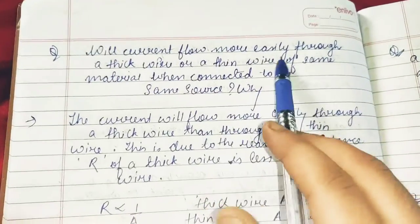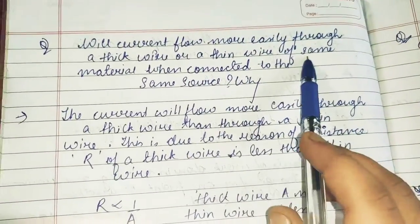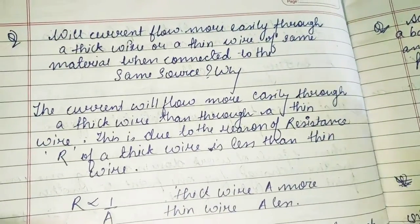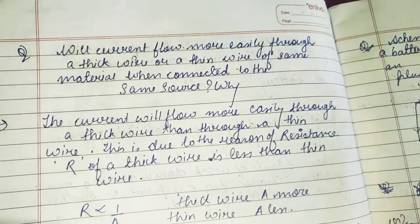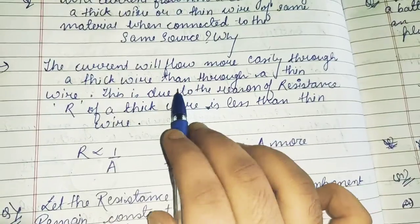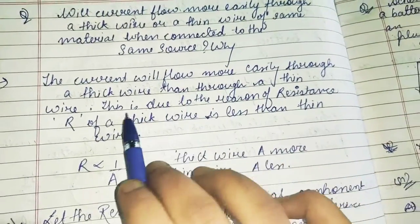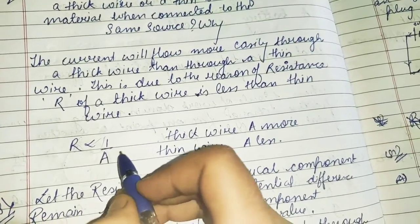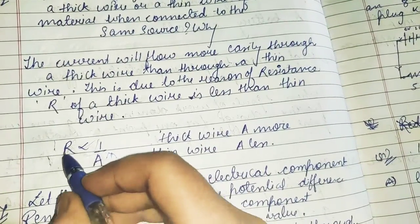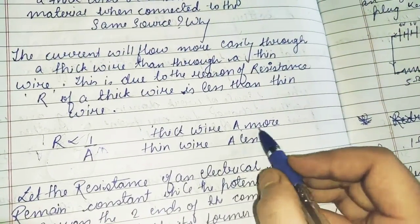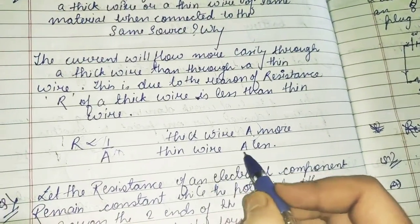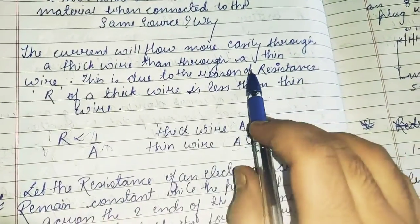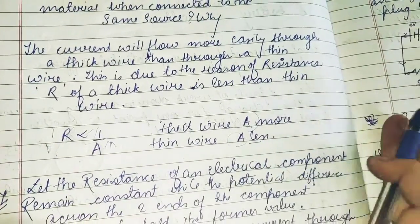Will current flow more easily through a thick wire or a thin wire of the same material when connected to the same source? The current will flow more easily through a thick wire than a thin wire. Resistance is inversely proportional to the area of cross section. A thick wire has more area of cross section, so its resistance is less. Therefore, current flows more easily through a thick wire than a thin wire.